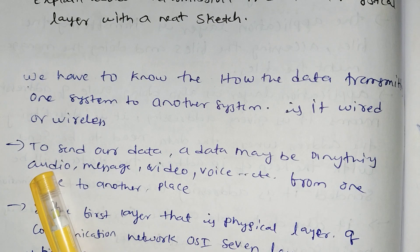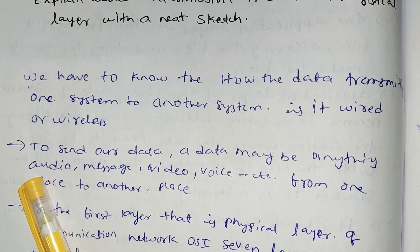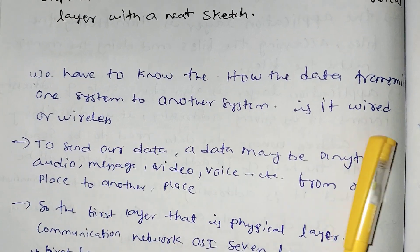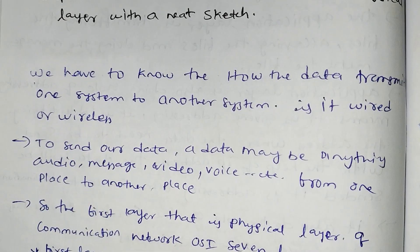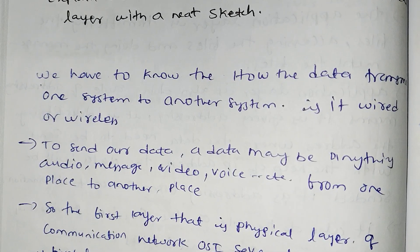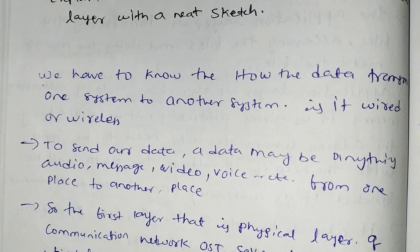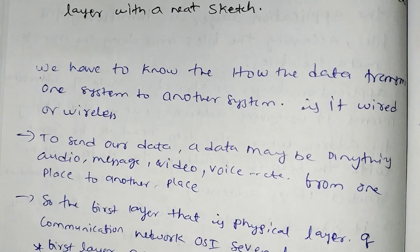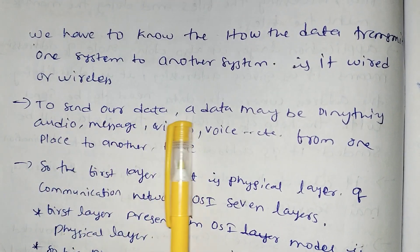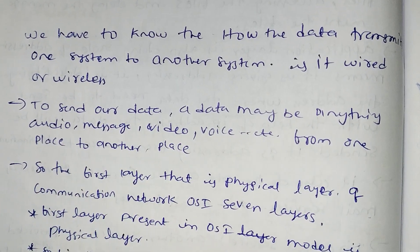We have one system that will transmit data from one computer to another computer — files and data are transferred. The connection can be wired, connected via cable, or wireless, connected via radio waves and computer networks. A sender can send data — maybe anything: audio, video, messages, voice, etc. — from one place to another place.